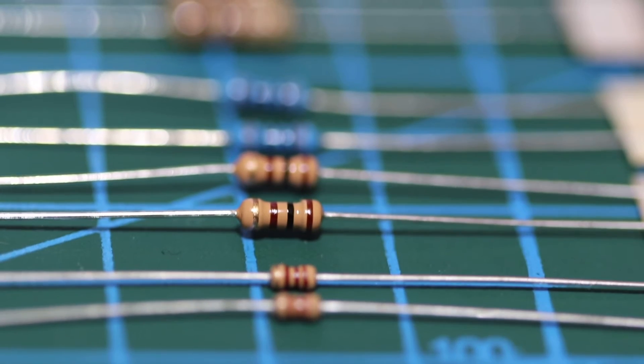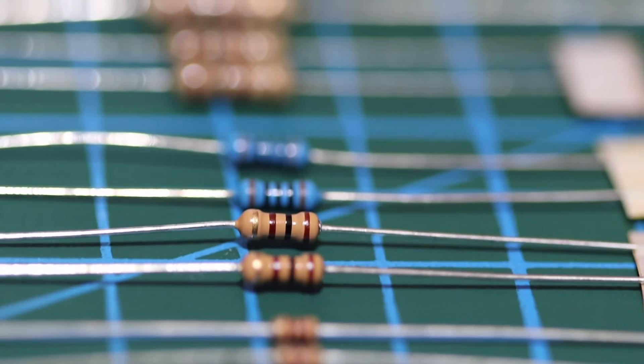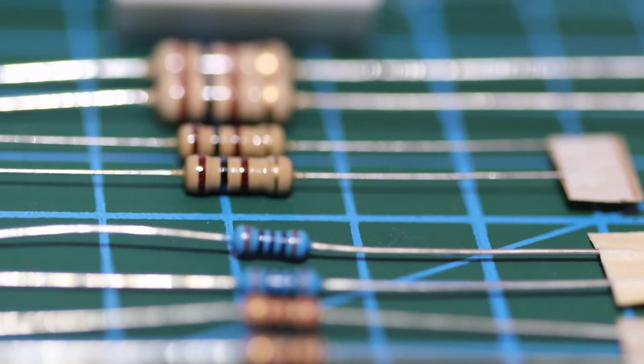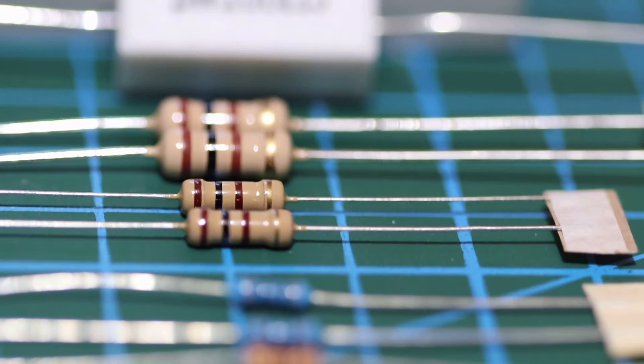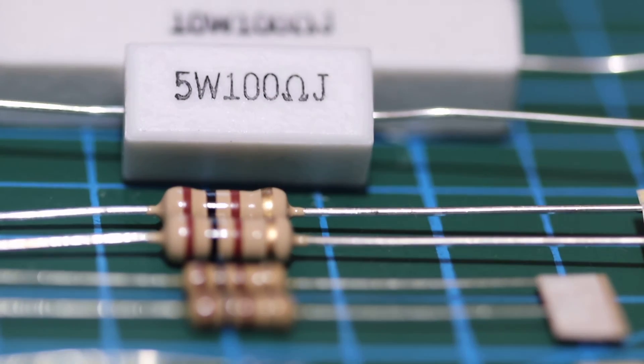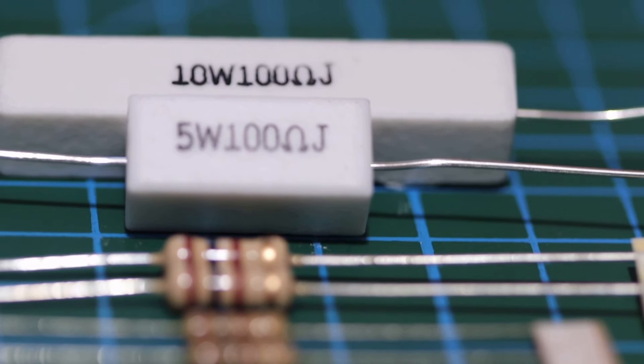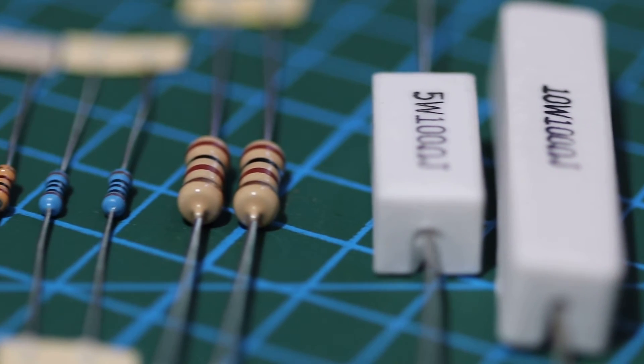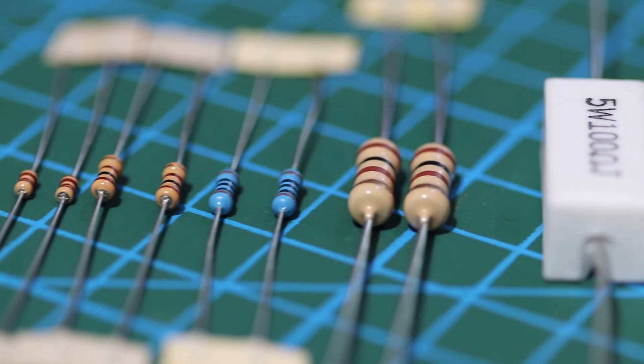Resistors come in a variety of sizes and shapes, and you might at first glance assume that the larger of these resistors has a higher resistance value, but in fact all of the resistors you can see here have values between 100 and 110 ohms. This clearly illustrates that there isn't a direct relationship between the size of a resistor and its resistance value.